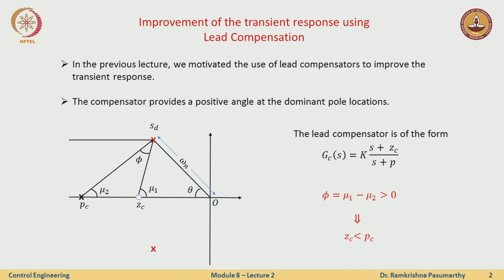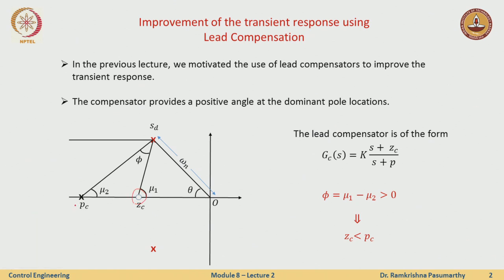What we concluded from the previous lecture is that this is the compensating zero and we should have a pole for practical reasons to realize this. We also knew why the pole should be to the left of the zero. What we will now try to answer is where should the zero be and how far left should the pole be from the zero, and that will lead to some nice exciting observations.